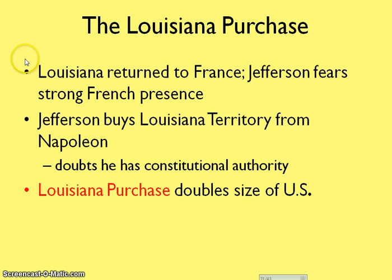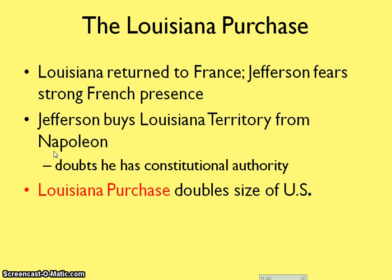Louisiana was originally returned to France, and Jefferson feared the French were going to have a stronger and stronger presence in North America. So Jefferson decided he needed to buy Louisiana from France, or they might go to war. Jefferson met with Napoleon, who was in charge of France at the time. Napoleon had lost some of his favor in France and didn't have the time to expand in the U.S., so he agreed to the Louisiana Purchase. They ended up selling Louisiana and much of the western land to the United States, which doubled the size of the U.S.